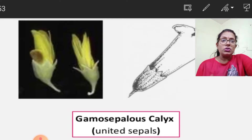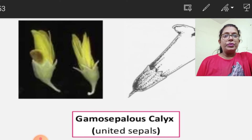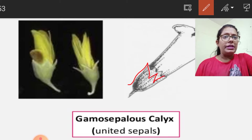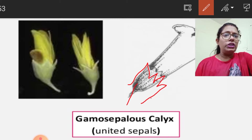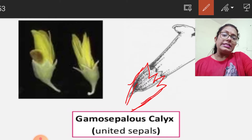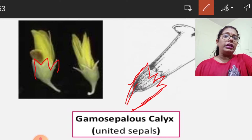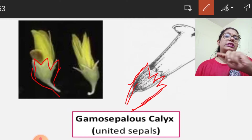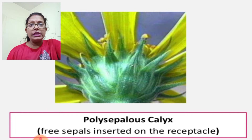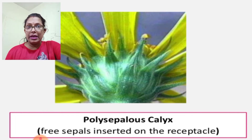In this slide, you can see all the sepals are united to form a single unit structure — this is called gamosepalous calyx. In some places the sepals are slightly free at the top but otherwise united. In polysepalous calyx, all the sepals are free from each other.